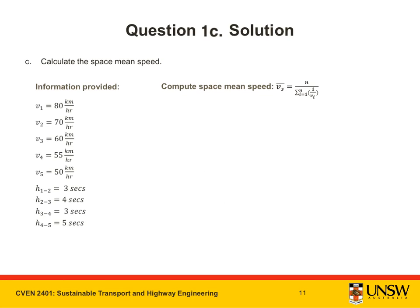From this, we know that time mean speed is an average speed past a point. Let's compare this to space mean speed, which is the focus of part C.